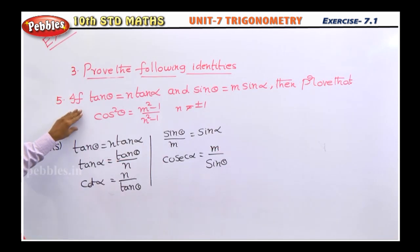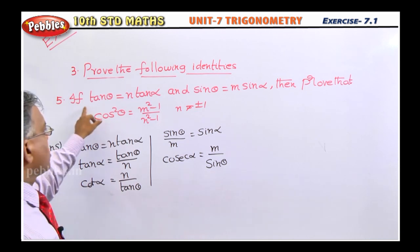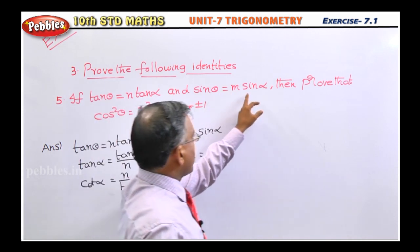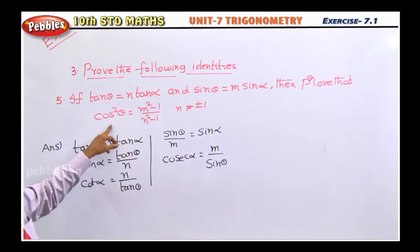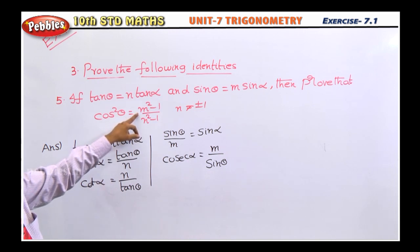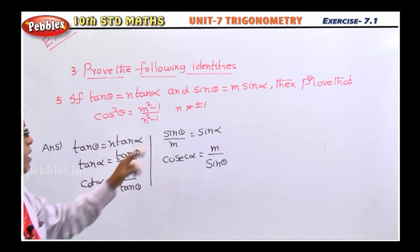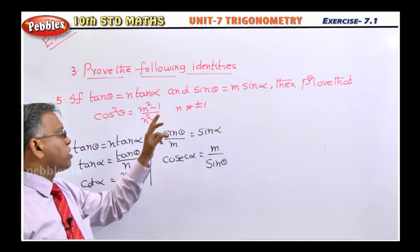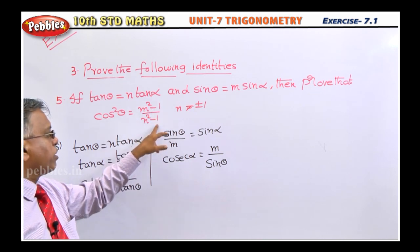Students, this is very important from the examination point of view. Listen carefully. If tan θ equals n tan α and sin θ equals m sin α, then prove that cos²θ equals (m²-1)/(n²-1), where n is not equal to plus or minus 1, because if n equals ±1 then n²-1 becomes 0, making the expression undefined.